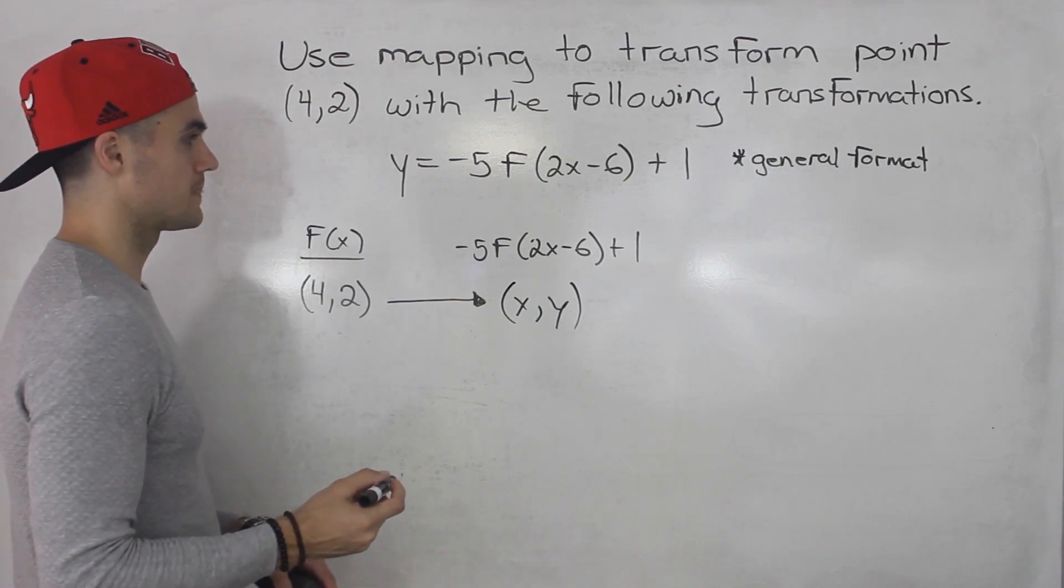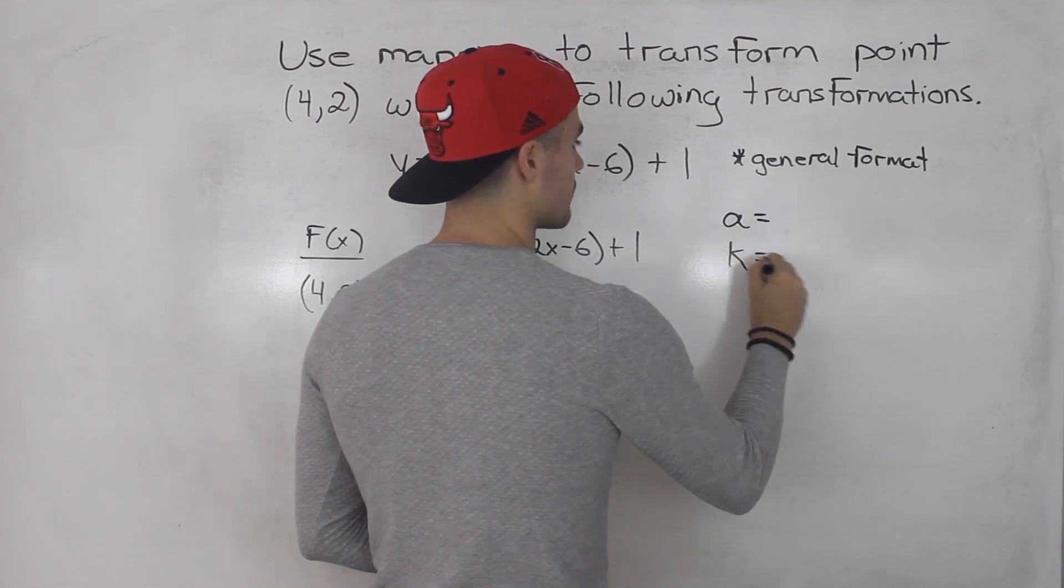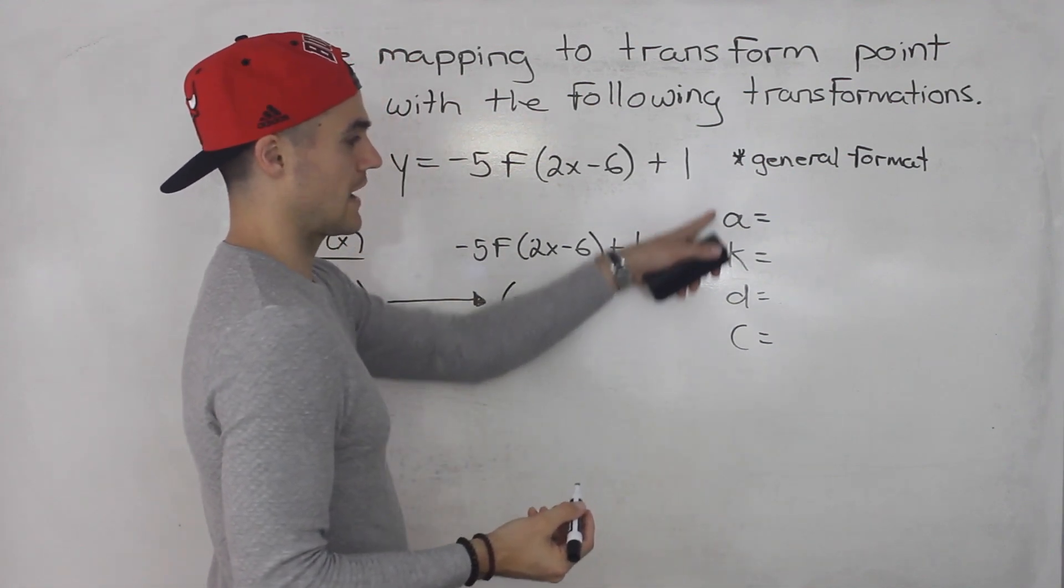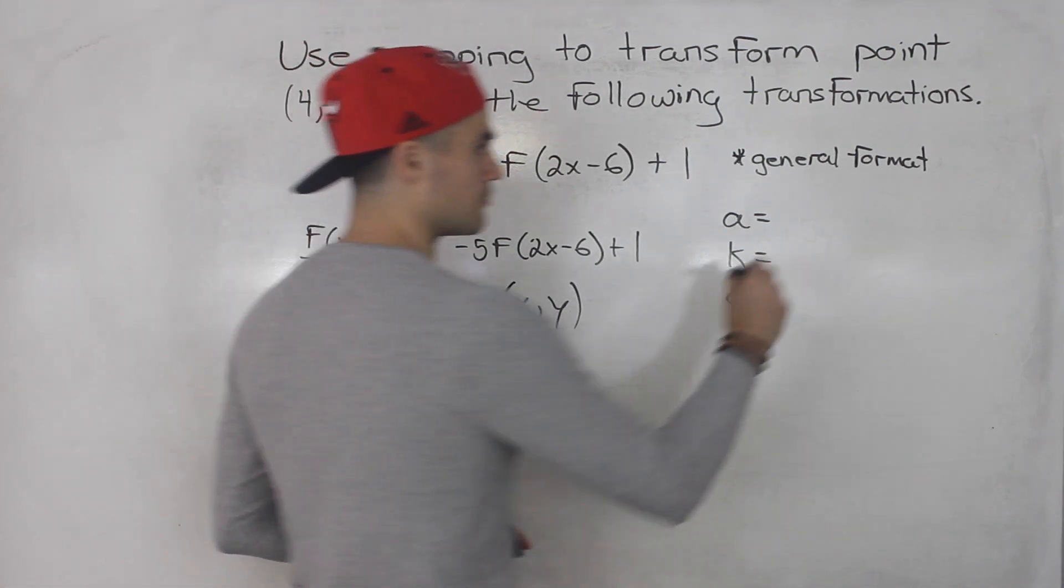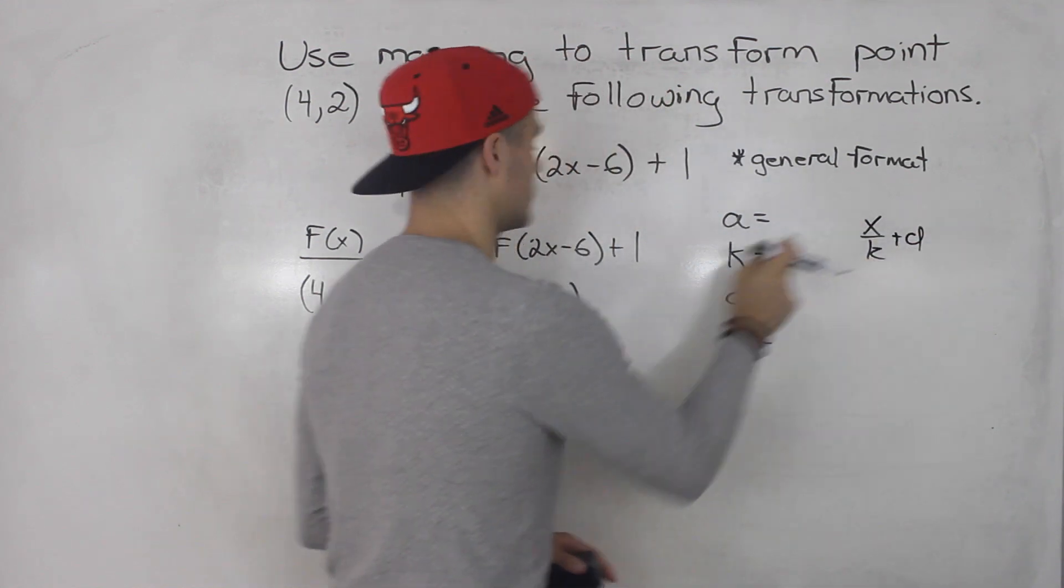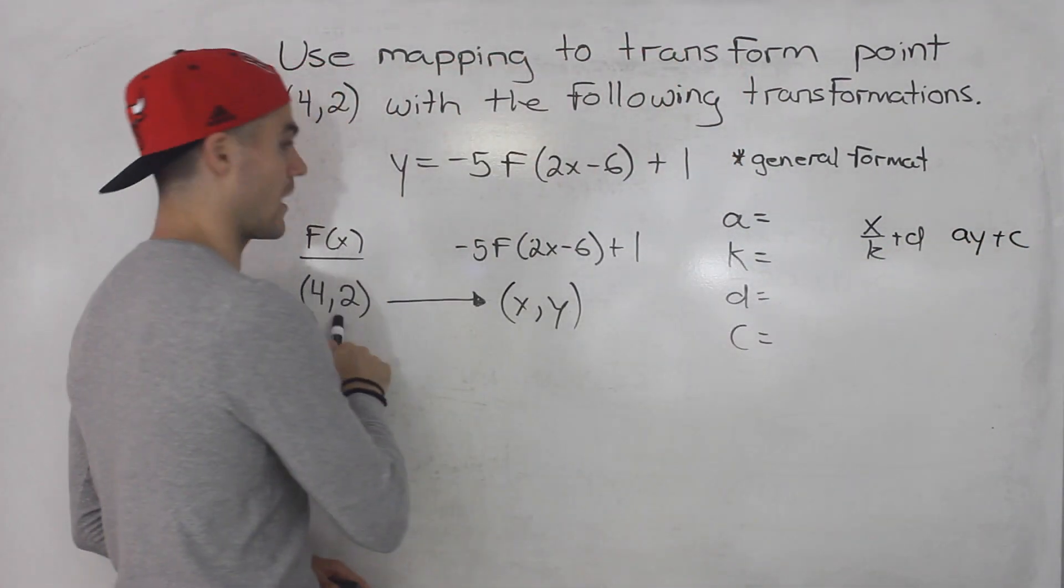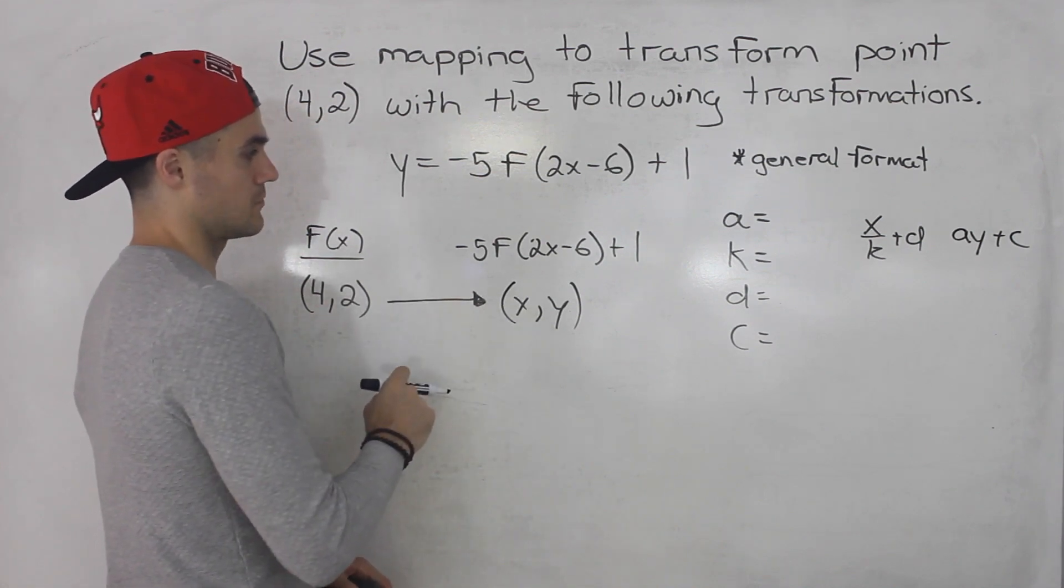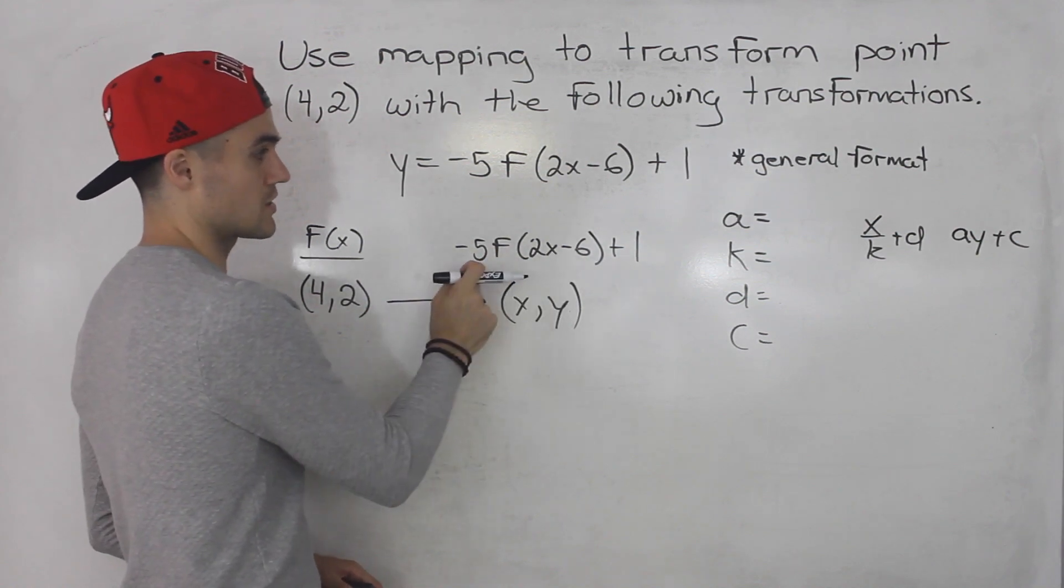What we have to do is figure out what's the a value, what's the k value, what's the d value, what's the c value - what are the transformation values. Once we have those, we're going to take this point on the parent function and put it through the formula: x over k plus d. That's what we're going to do with the x value 4, and then we're going to do ay plus c with the y value of 2. So what's the a value here going to be? Well, it's the number that's outside of the function, so it's negative 5.